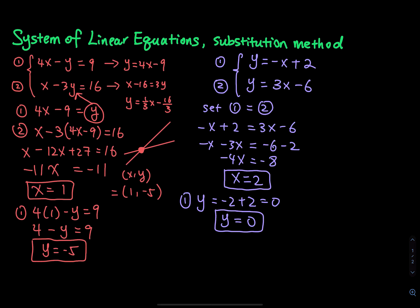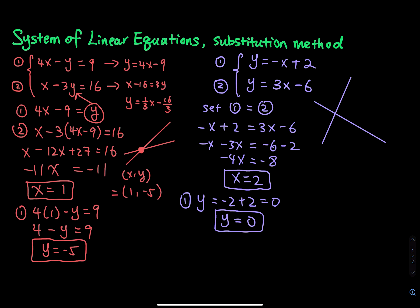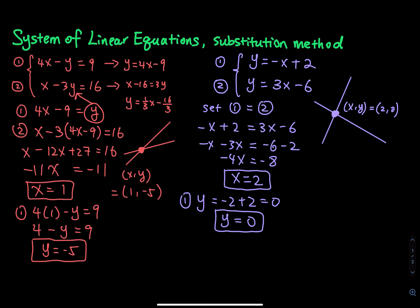The first equation has slope negative 1, so the line is decreasing, and the other has slope 3, so the line is going up. This means they intersect at a point. The coordinate of that intersection is x equals 2, y equals 0 — that is the solution to the second system.